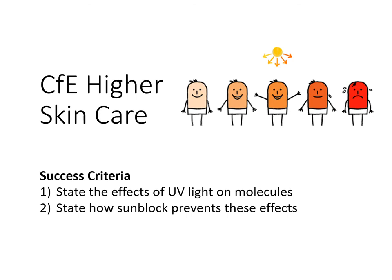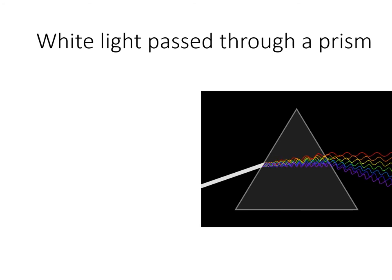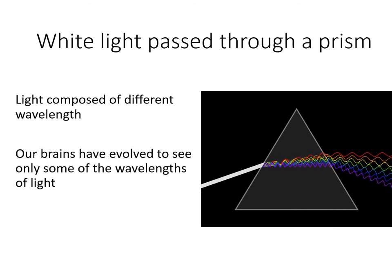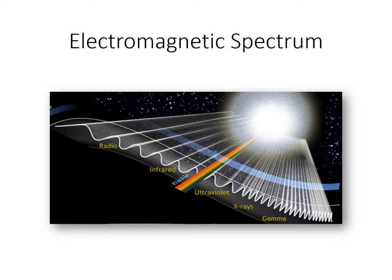Let's crack on. CFE Higher Skin Care - this lesson is in two halves. First we'll state the effects of UV light on molecules and how sunblock prevents these effects. Light is made up of different wavelengths, but we can only see certain wavelengths. If you look at the full electromagnetic spectrum, visible light is only a small part of it. You have radio waves, infrared, ultraviolet, X-rays, gamma rays. The one we're interested in is ultraviolet light, which is high energy and can cause us problems.